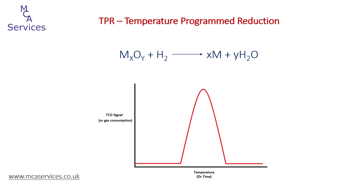When the sample has been fully reduced, the balance between hydrogen content in the analysis and reference streams is restored and the TCD signal returns to its original baseline. We have two options with respect to increasing temperature: we can continue to increase temperature beyond the reduction phase and await return of the TCD signal to baseline, or we can stop the temperature ramp during the reduction phase and hold until the signal returns to baseline. This second option is useful when we want to establish the time required for complete reduction at a fixed temperature.